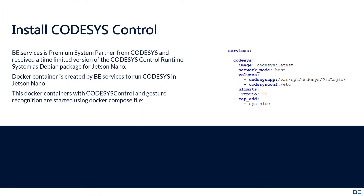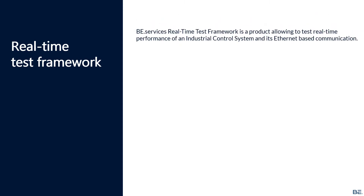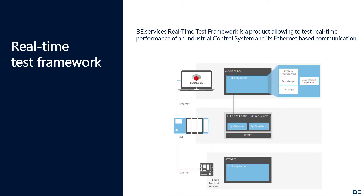How can we make sure the device really works in real-time? For this, B-Services has a product called the Real-Time Test Framework. It consists of several parts: first, a real-time test application that runs directly on the PLC; second, a Network Analyzer connected to the PLC via Ethernet. With this system, we can check not only the jitter of tasks in the PLC, but also the stability and jitter of transmission over Ethernet.